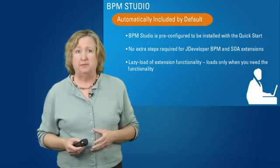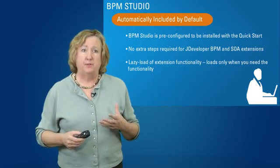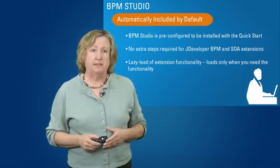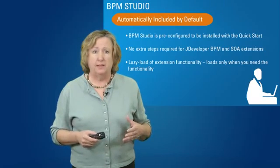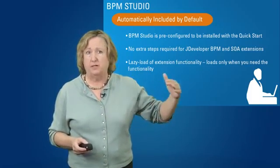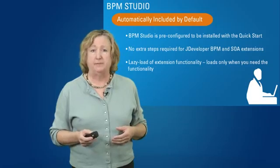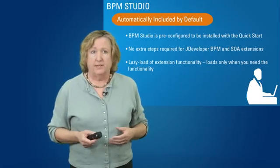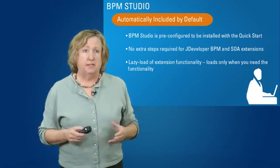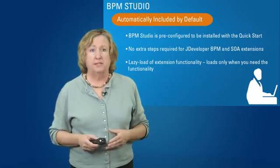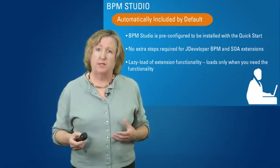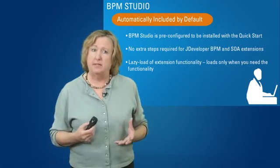Studio is automatically included by default, meaning you do not have to do any extra steps to get the BPM and SOA JDeveloper extensions — it's pre-configured automatically. You get a lazy load of extension functionality, so the extensions in the template are only loaded when you first start using that functionality, giving you a very quick startup. The integrated server in the default configuration is available immediately, with no additional installation steps. It's a WebLogic server pre-configured for your use, and it includes SOA and BPM functionality by default.